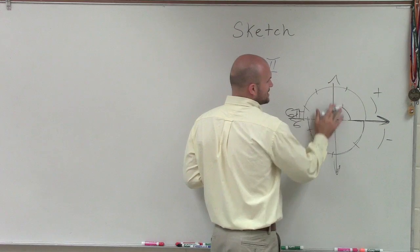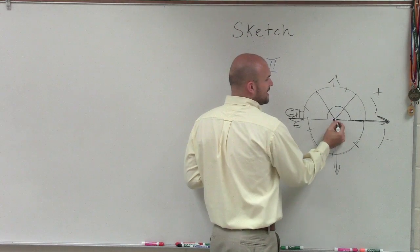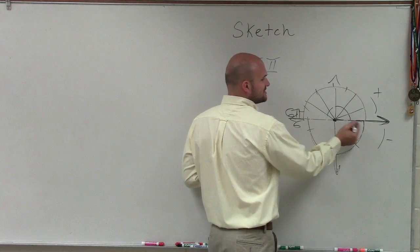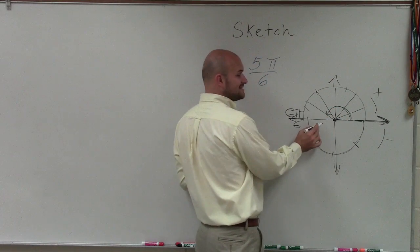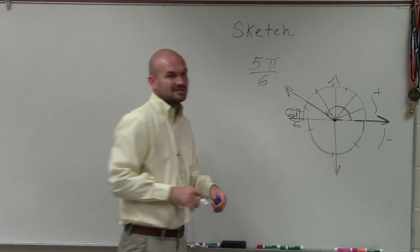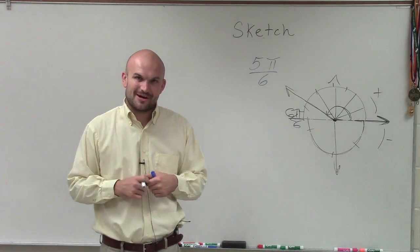So to do that, what I like to do is I like to just take my half of my circle and break it up into thirds. Then I split those in half, so now I broke it up into 6. So therefore, I can see if I start here and rotate a ray all the way to here, which is 1 sixth less than 6 sixths, I now have sketched my angle 5 pi over 6. And since it's counterclockwise, it's in the positive direction. And there you go. Thanks.